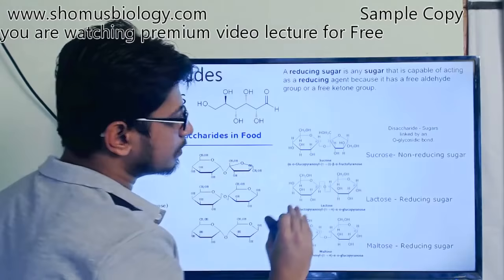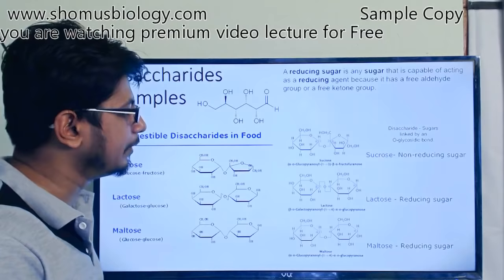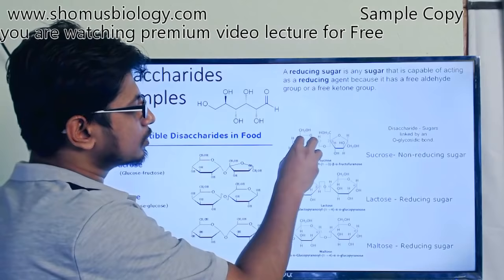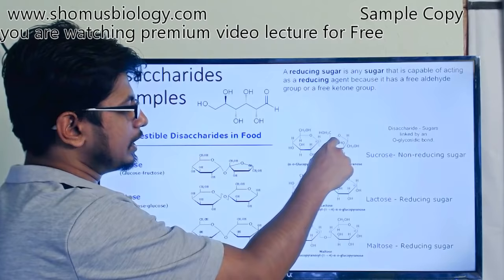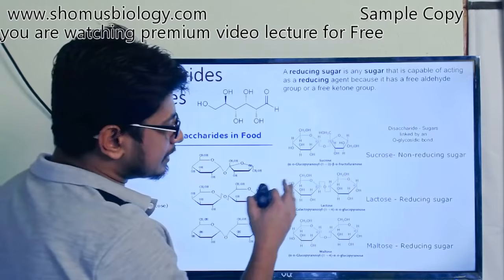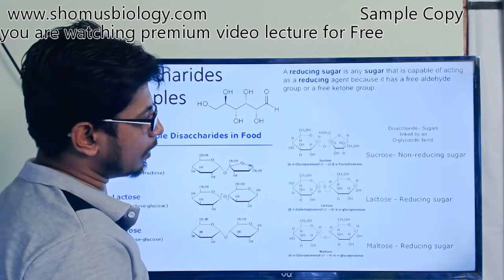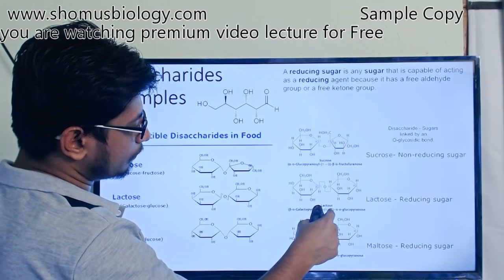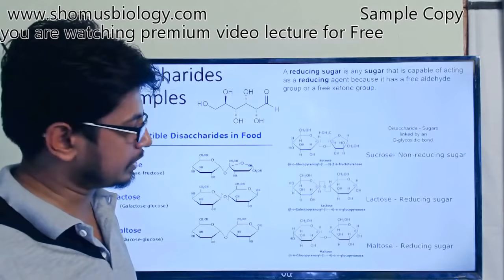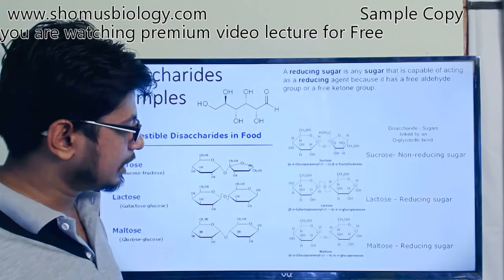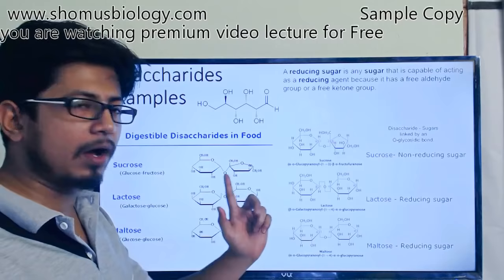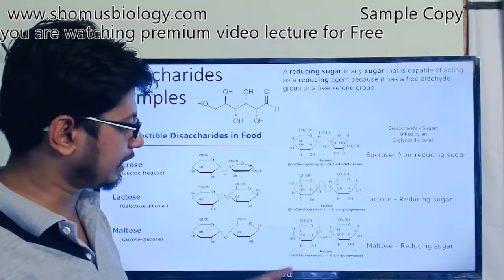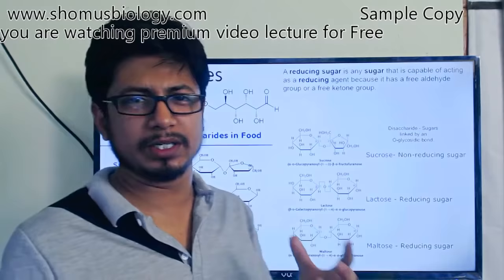The disaccharide bond is written as alpha-D-glucopyranosyl-1-2-beta-D-fructofuranose. Pyranose refers to a six-membered ring structure, while furanose refers to a five-carbon ring structure. For lactose, the linkage is beta-1-4: beta-D-galactopyranosyl-1-4-alpha-D-glucopyranose — a galactose linked to glucose via a 1-4 carbon link. In maltose, two glucose units are linked together with an alpha-1-4 linkage. So sucrose has alpha-1-2, lactose has beta-1-4, and maltose has alpha-1-4 linkage, giving rise to different types of sugars.